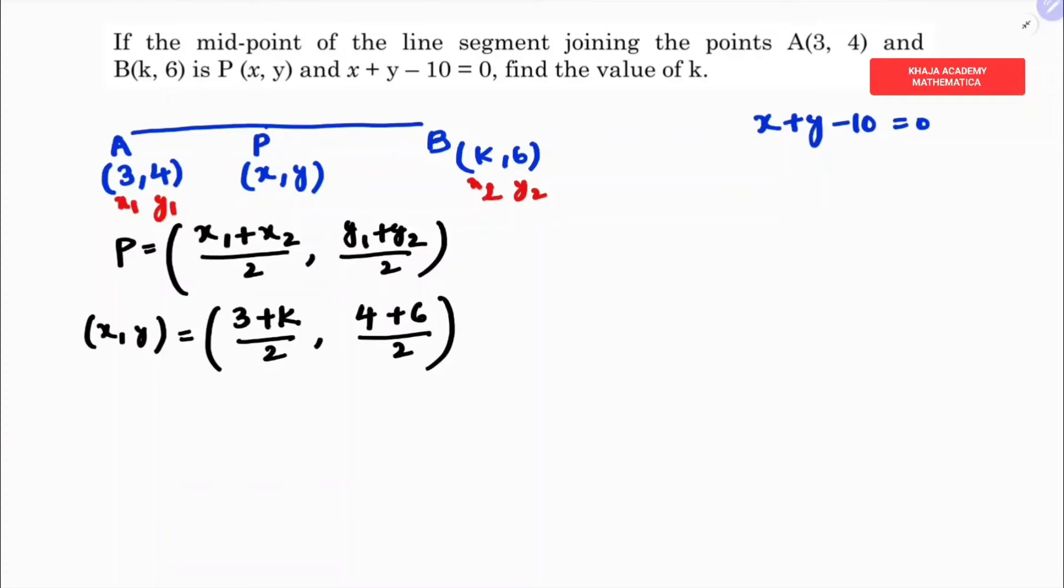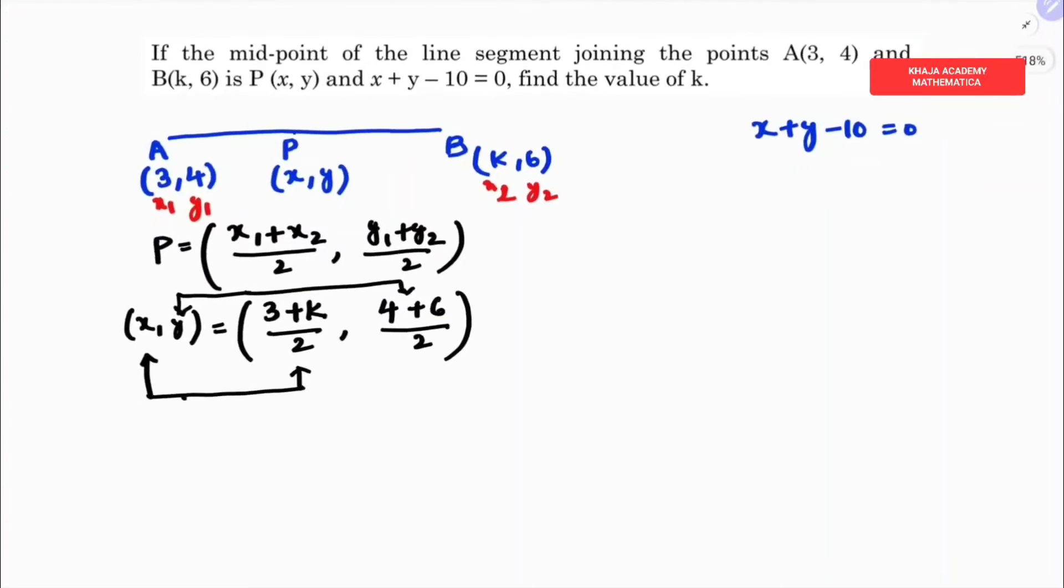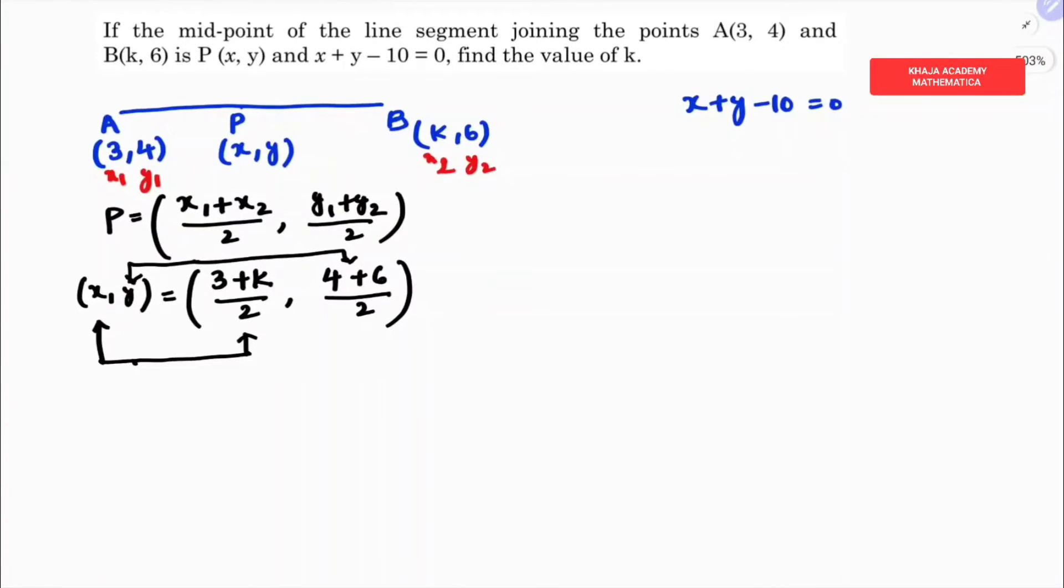Now I will equate this, comparing abscissa with abscissa and ordinate with ordinate. If I simplify further, the x value is (3 + k)/2 and the y value is (4 + 6)/2 which is 10/2, so y = 5.